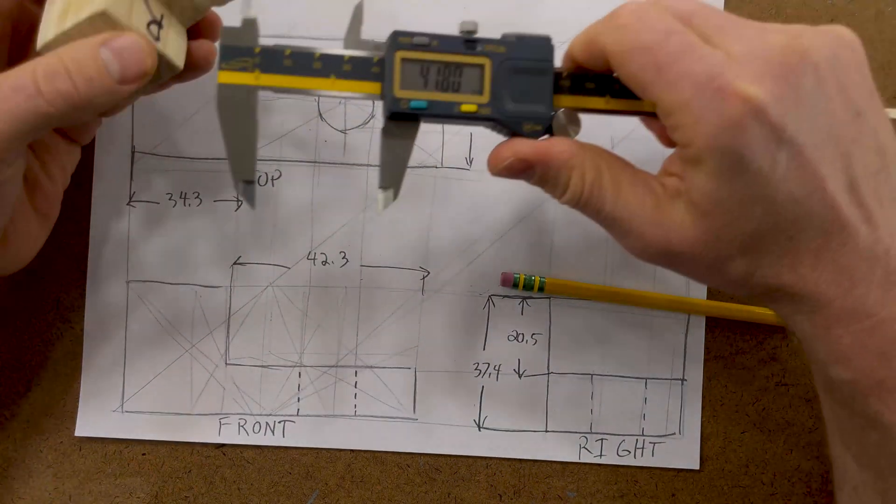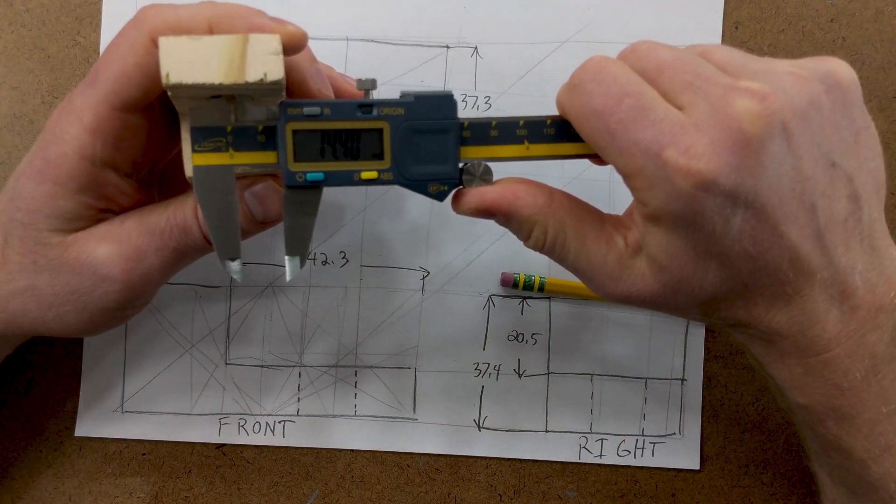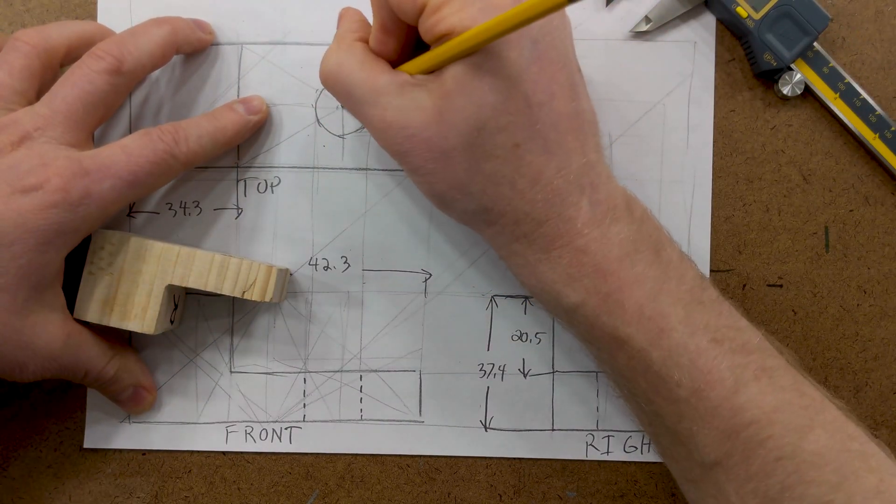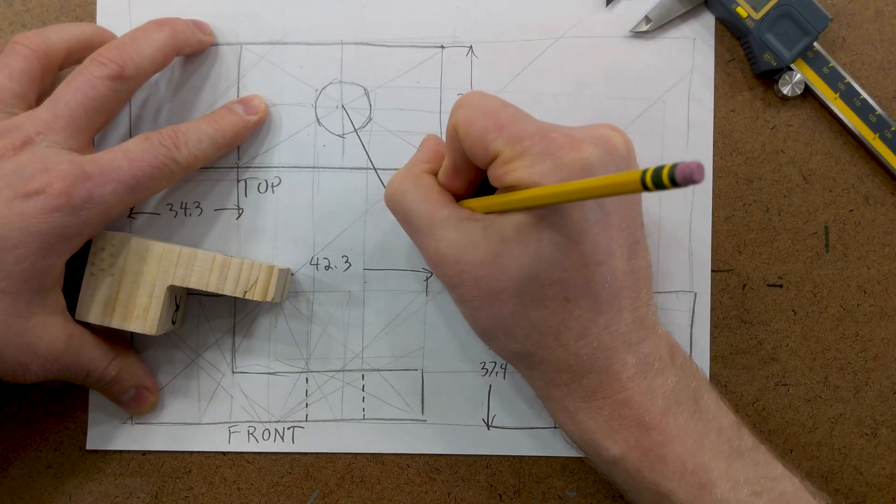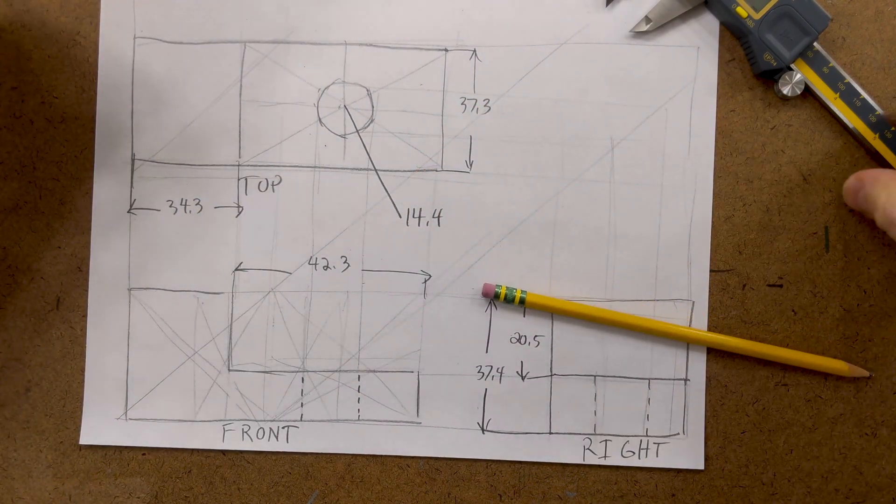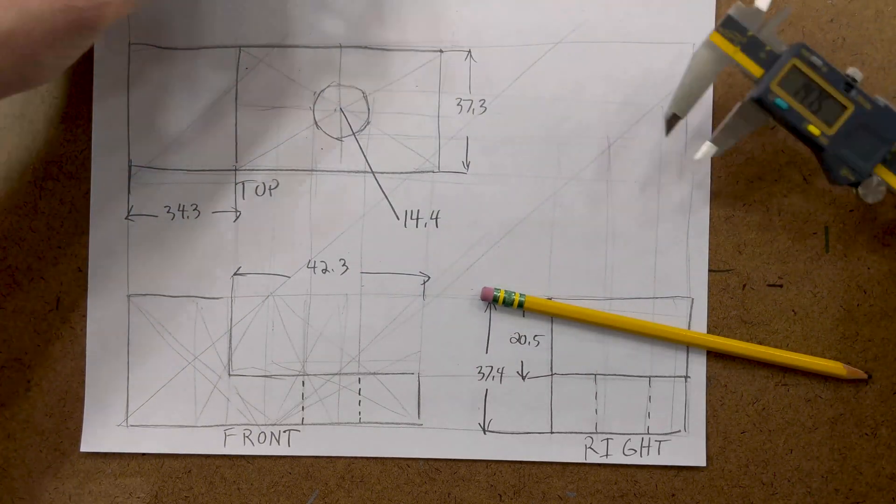And then we just need to know the interior diameter of the hole, maybe about 14.4. So we can put this right there. We'll just call that in the center of that.